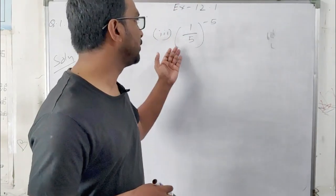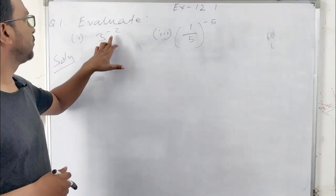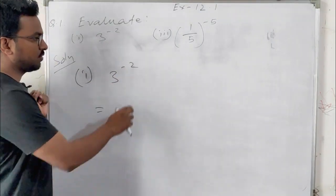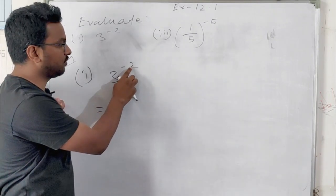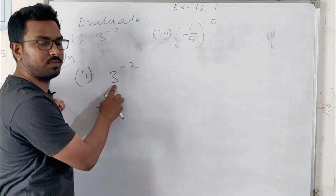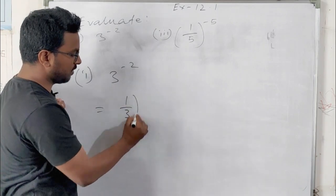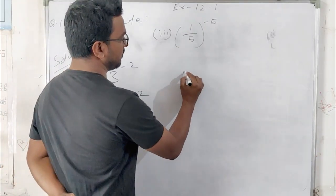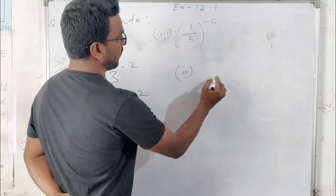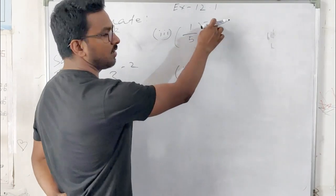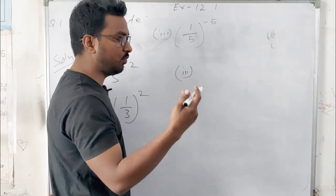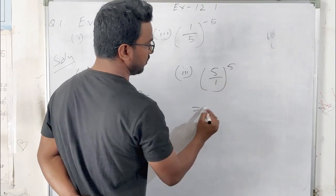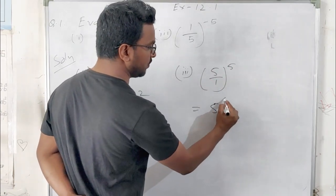The first question is 3 to the power minus 2. The power is negative, so to make it positive we take the reciprocal. The reciprocal becomes 1 by 3 and the power becomes positive. Similarly, if we take the reciprocal the exponent becomes positive, so 5 by 1 to the power 5, and 5 by 1 is just 5, so the answer is 5 to the power 5.